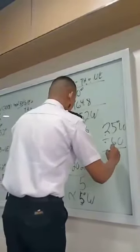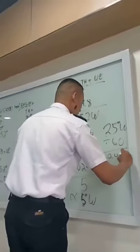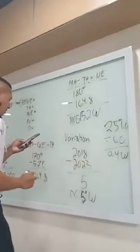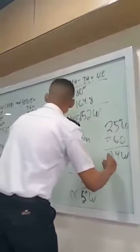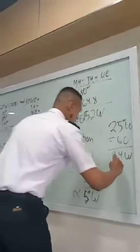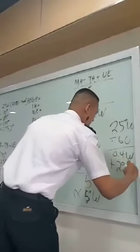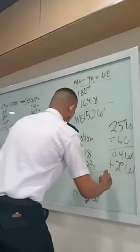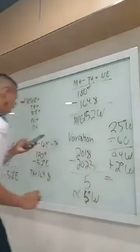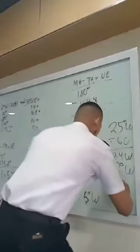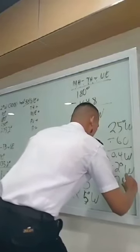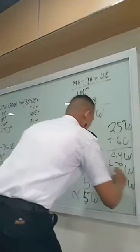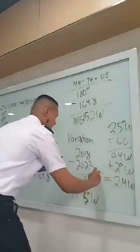Plus 2 degrees west is equal to 2.4 west. And that's our variation.